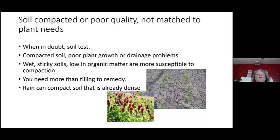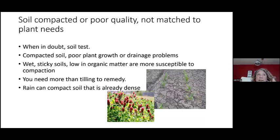When in doubt, do a soil test — whether you're seeing symptoms or starting a new garden. Remember that rain can compact soil that's already showing some bulk density. In addition to one tilling and then no-till, a cover crop can help. I use cover crops in some bare areas of my landscape — it's not always used in ornamentals, but I've found it helpful while waiting to do some planting.